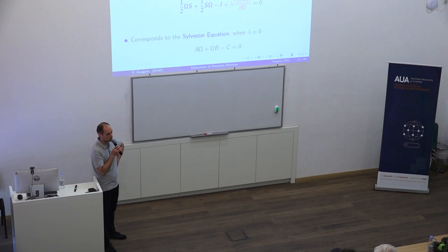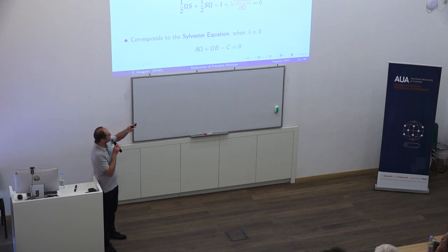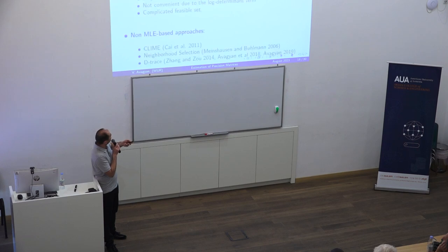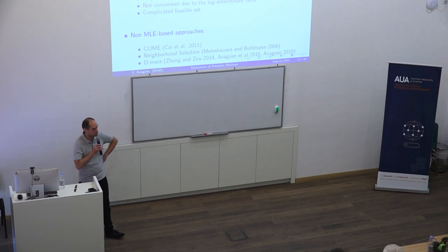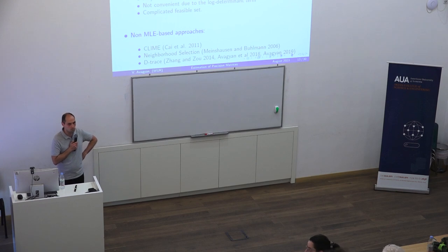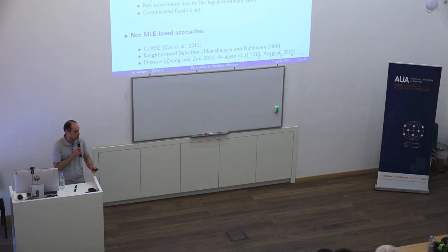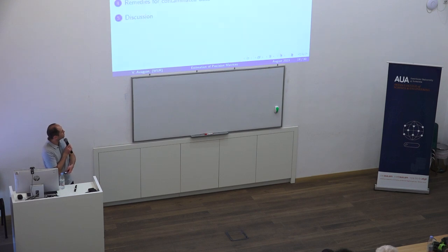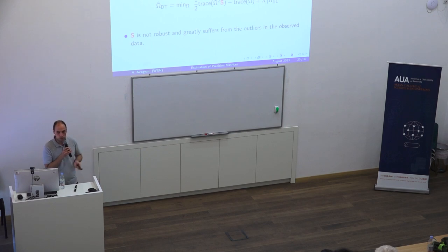The ridge estimator does not provide sparsity, but it still solves the dimensionality problem. So all these estimators are designed for large p. Q: Does the trick of replacing S with robust covariance measures work only for L1 penalization? A: No, for any penalization. These two estimators were chosen because they are the standards, but you could use any estimator with the robust covariance alternatives.